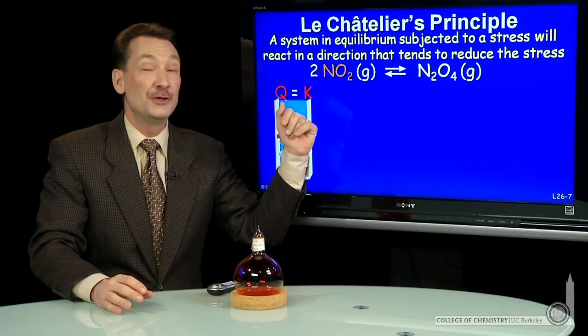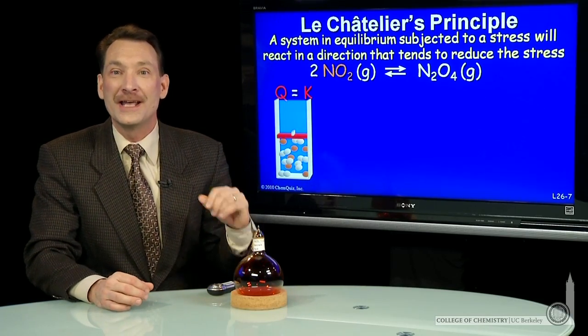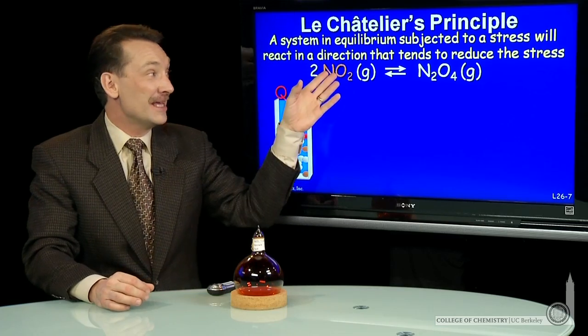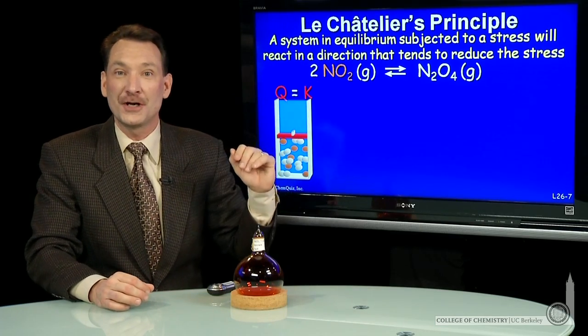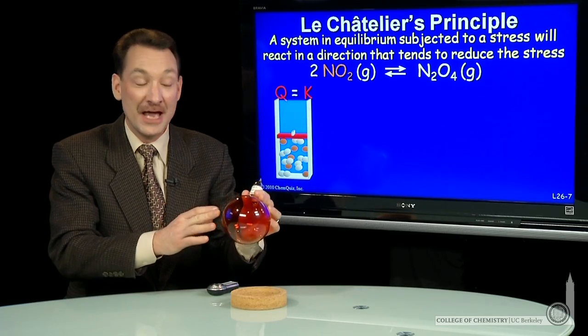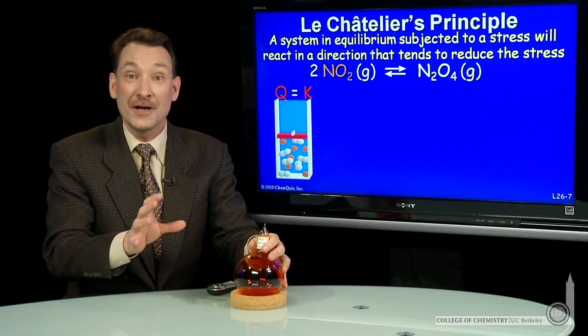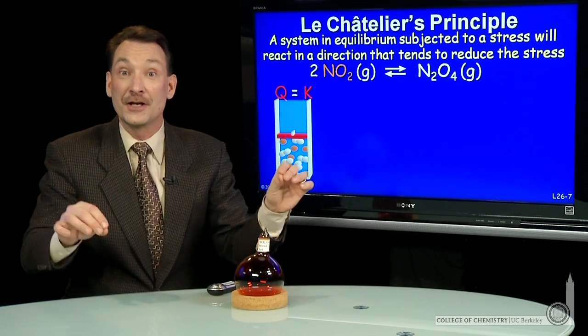The equilibrium of NO2 gas and N2O4 is dynamic. That is, even though the macroscopic partial pressures aren't changing at equilibrium and you don't see a color change, microscopically, the molecules are interchanging.